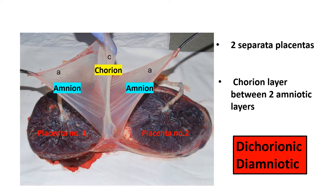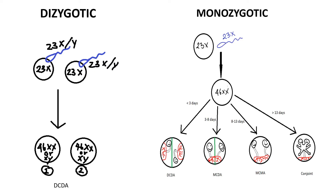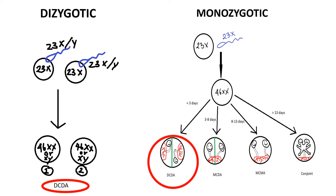From these findings, we can say this is dichorionic — because there are two separate placentas — and diamniotic — because there are two amniotic sacs. To understand what gender combinations are possible in DCDA twins, we need to know how twin gestations happen. Basically, twinning occurs due to two types of conception: dizygotic, which always forms DCDA twins, and monozygotic, which depending on the day of division can result in DCDA, MCDA, MCMA, or conjoined twins. So DCDA type is common to both.